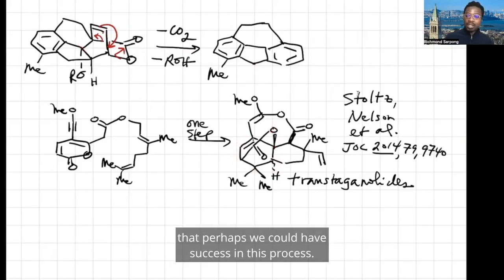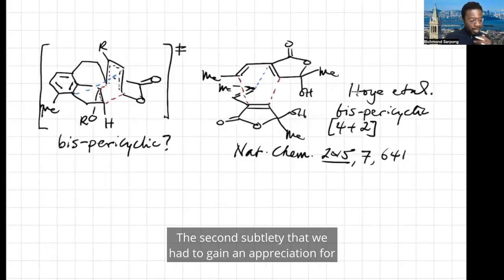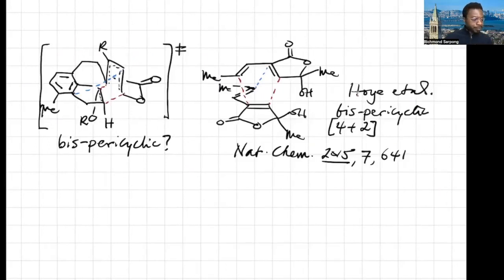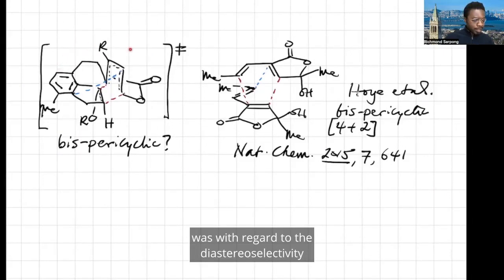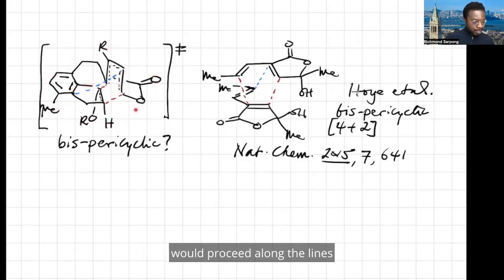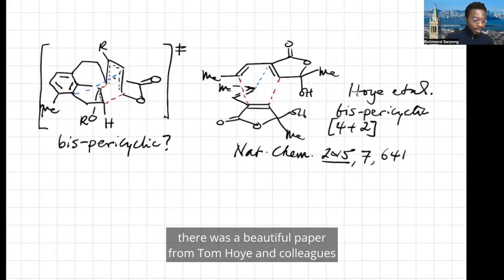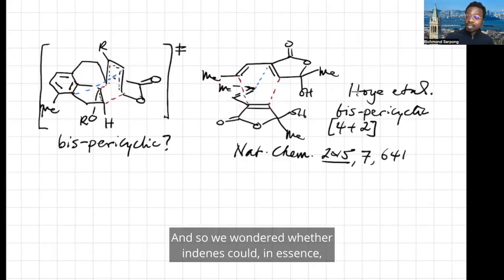And so that gave us some confidence that perhaps we could have success in this process. The second subtlety that we had to gain an appreciation for was with regard to the diastereoselectivity of the cycloaddition. I thought that perhaps the cycloadduct would proceed along the lines of a bispericyclic transition state. During that period, there was a beautiful paper from Tom Hoy and colleagues that described these types of bispericyclic transition states, and so we wondered whether indines could, in essence, undergo similar bispericyclic transition states.